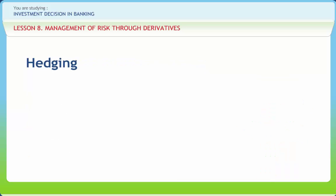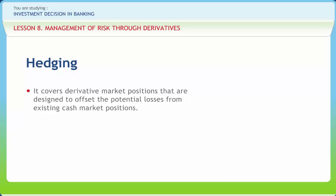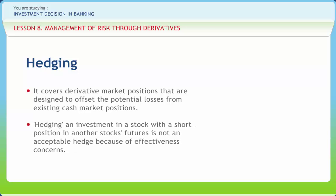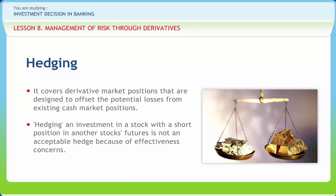The term hedging covers derivative market positions designed to offset potential losses from existing cash market positions. An investment in a stock with a short position in another stock's futures is not an acceptable hedge because of effectiveness concerns, even for merger arbitrage where long and short positions in two merging companies are combined. Aggressive growth hedge fund investors invest in equities expected to experience acceleration in growth of earnings per share — generally high P/E ratios, low or no dividends, often smaller and micro-cap stocks expected to experience rapid growth.